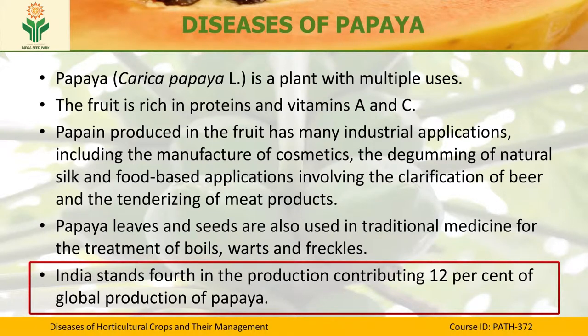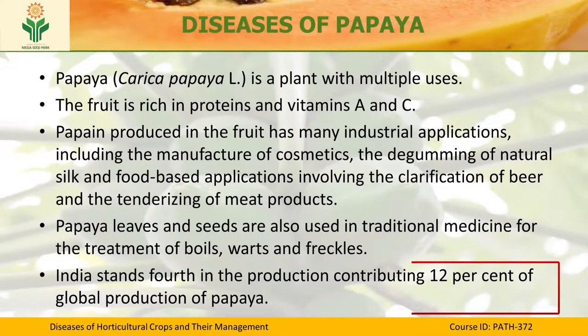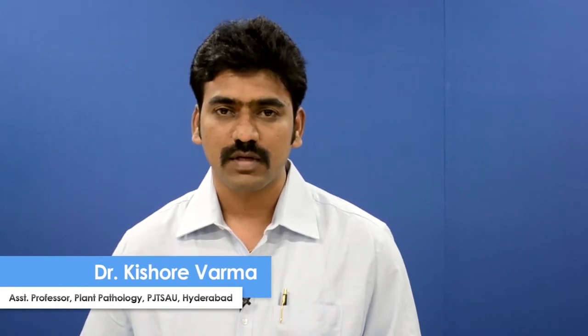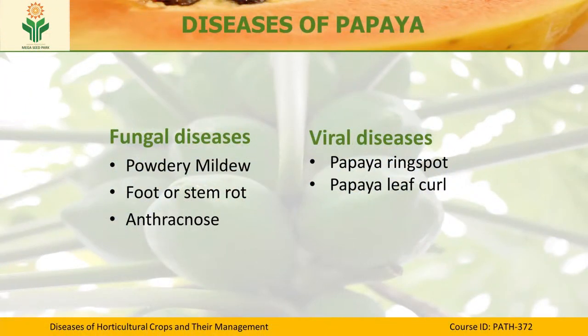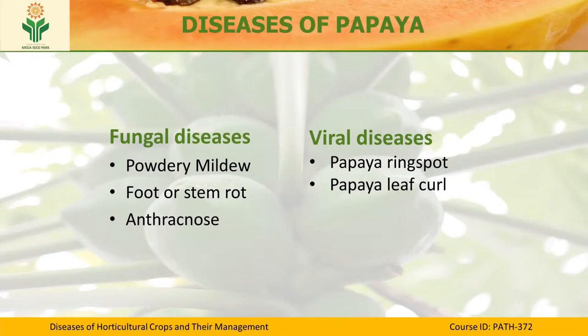Coming to India, India stands fourth in the production of papaya, contributing 12% of global papaya production. However, papaya production is limited by a number of biotic stresses, among which diseases caused by fungi and viruses are of utmost importance. In this lecture we will be discussing the fungal diseases — foot rot or stem rot and anthracnose — and the important viral diseases like papaya ring spot and papaya leaf curl.